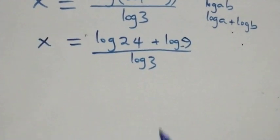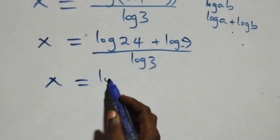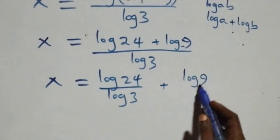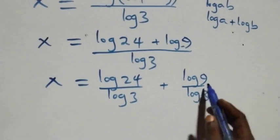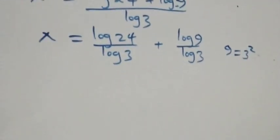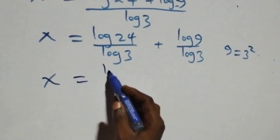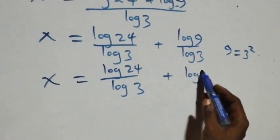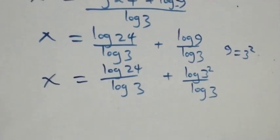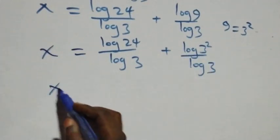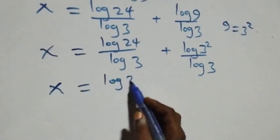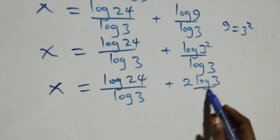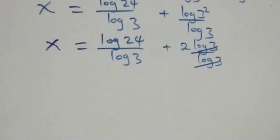At this next step we separate this into two fractions and we have x equals log twenty-four over log three, plus log nine over log three. Now nine can be expressed as three times three, which is three squared. Applying the power rule of logarithms, two comes down, giving us log twenty-four over log three, plus two times log three over log three. Here log three cancels each other and we have two left.